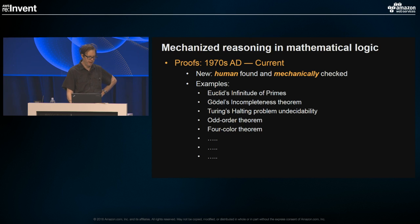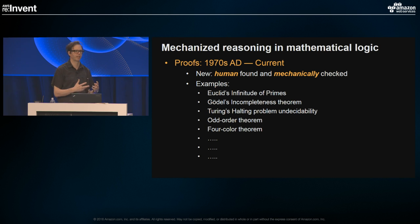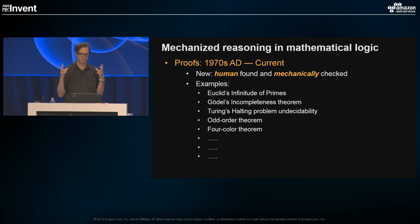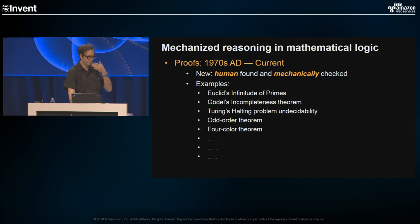From the 1970s on, we begin to see humans finding proofs in logic, but then software mechanically checking the proof. Creative individuals find a proof, express it in a machine-readable and checkable format, and then a simple mechanical theorem prover checks each step to make sure all the I's are dotted and T's are crossed. Many historical theorems have been proved mechanically — the four color theorem is probably the most famous.